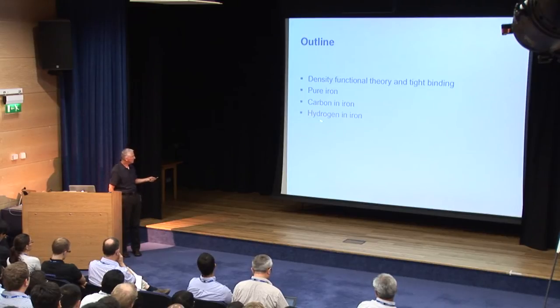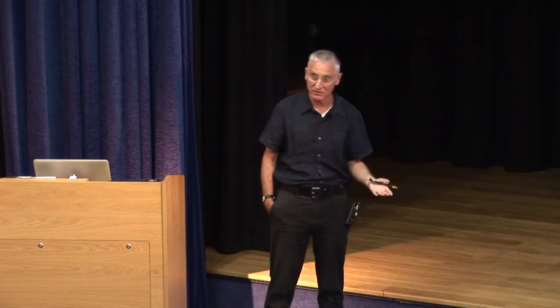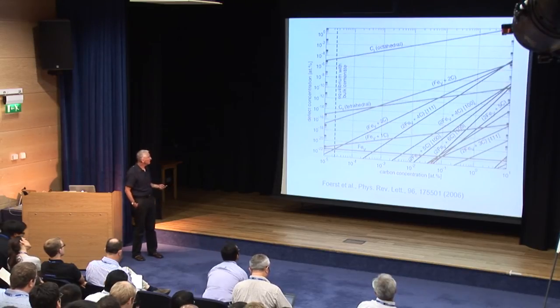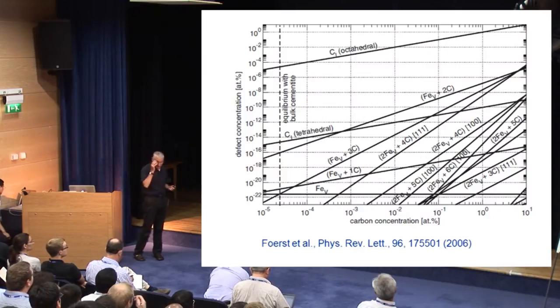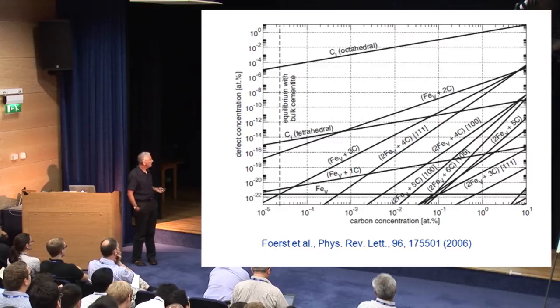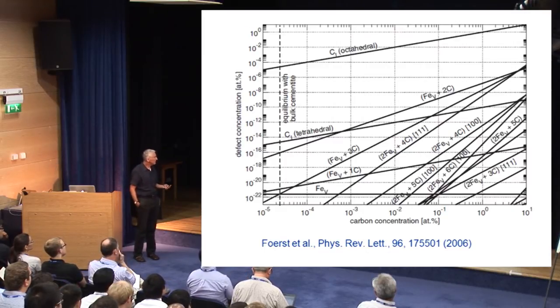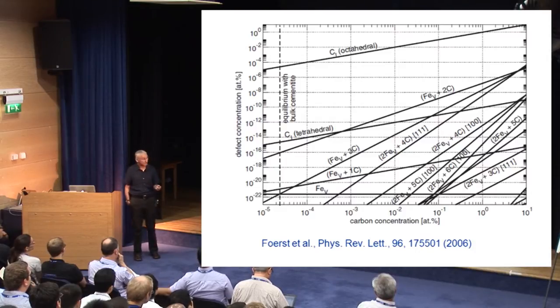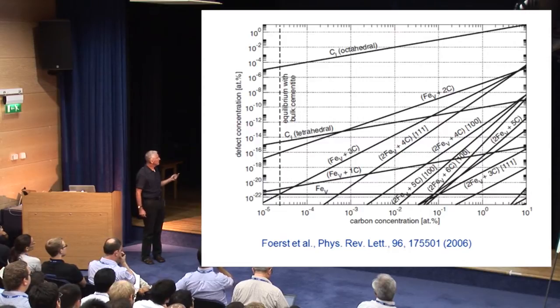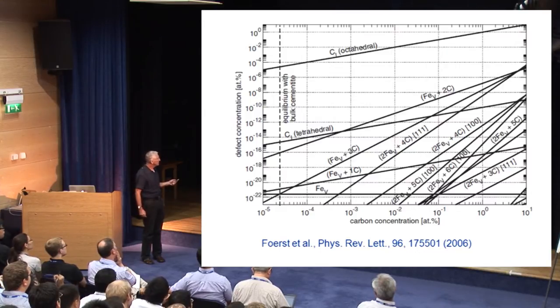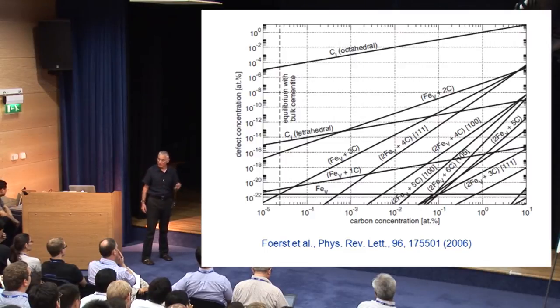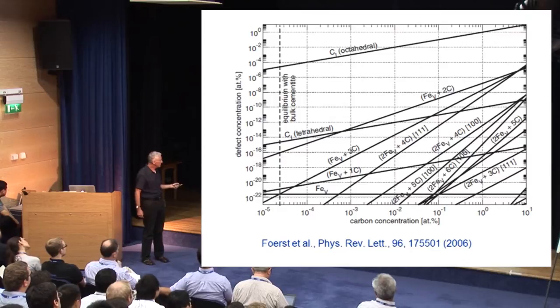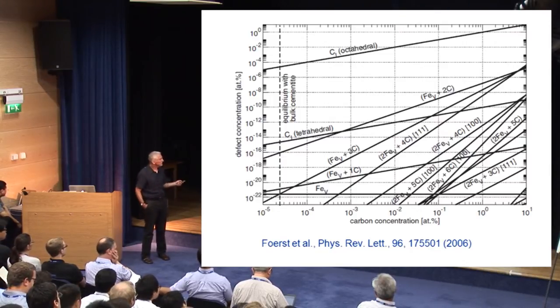Hydrogen is rather different in the sense that in the BCC structure it always occupies tetrahedral sites at both concentrated and dilute limits. I want to start with a chart I found quite striking. These are density functional calculations done by a highly reputable group — Sidney Yip is one of the authors. They calculated, using DFT, the formation energies and configurational entropies of a large number of defect complexes, particularly containing either carbon or vacancies, and then plotted the concentrations of these defects through thermodynamic argument — minimization of free energy — as a function of carbon concentration at 160 degrees centigrade.